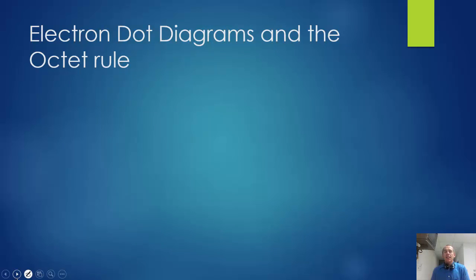The next thing is the octet rule, okay? Atoms are stable when the s and p orbitals are full. When those are full, atoms are stable. If they're not full, then they're going to form bonds in order to become stable. And this is at a given energy level.